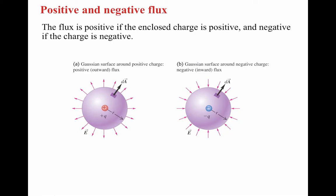The only difference between a positive and negative charge is the direction of the electric field. For a positive charge, the angle between dA (represented by N-hat) and E is 0°, so cosine(0°) = 1. For a negative charge, the angle is 180°, so cosine(180°) = −1. That's the only difference.